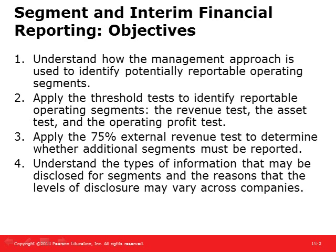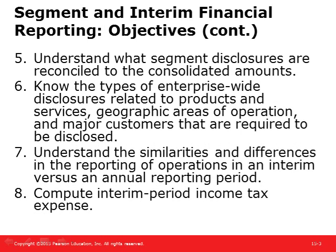What we want to understand today is how the management approach is used to identify potentially reportable operating segments. We'll apply the threshold tests — the revenue test, the asset test, and the operating profit test — to identify reportable operating segments, and apply the 75% revenue test to determine whether additional segments must be reported. We'll also understand the types of information disclosed for segments, enterprise-wide disclosures, and how interim period income tax expense is computed.